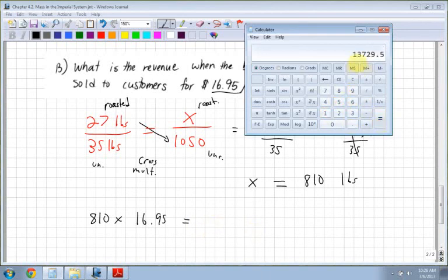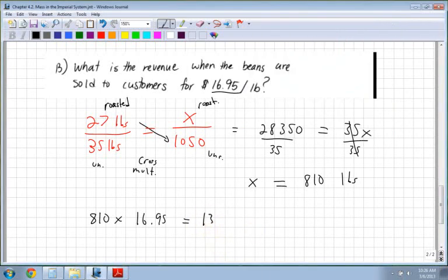which is $13,729.50. So that is the revenue that is made when beans are sold to customers for $16.95.